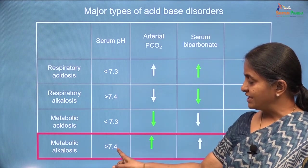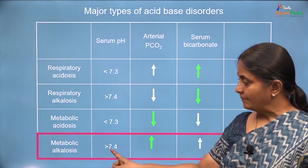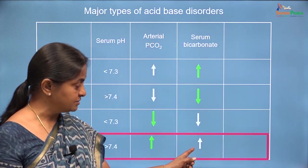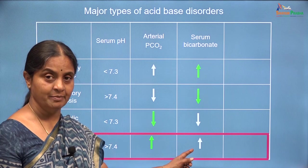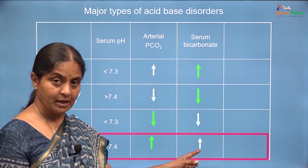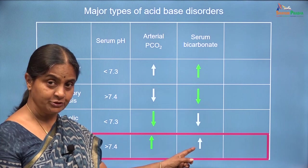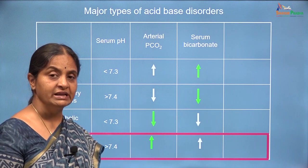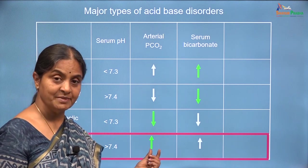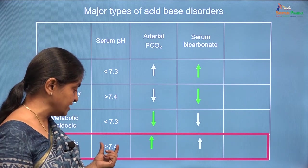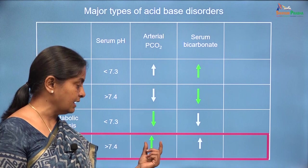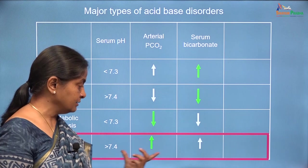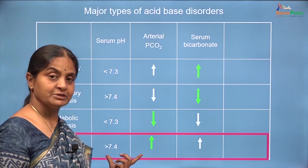In this condition, the plasma pH is higher than normal and it is referred to as metabolic because the primary reason for the alkalosis is an increase in serum bicarbonate. When there is an increase in serum bicarbonate, the pH is likely to increase, but the lungs will withhold some carbon dioxide so as to limit the increase in pH. This is the compensatory mechanism. So this triad where the plasma pH is high, bicarbonate is high and carbon dioxide is high because of compensation — this triad is referred to as metabolic alkalosis.